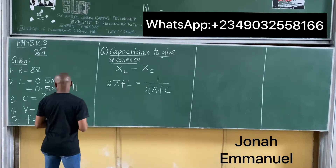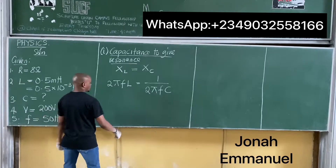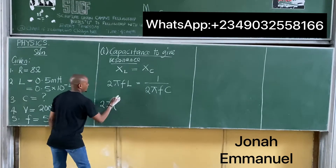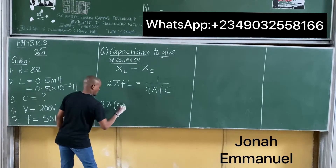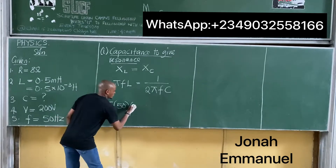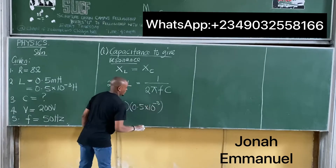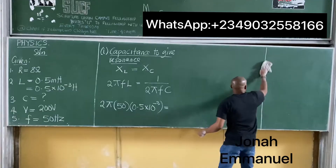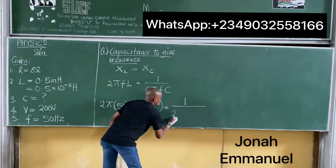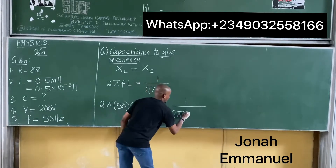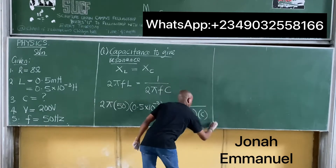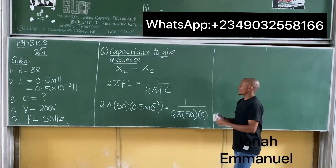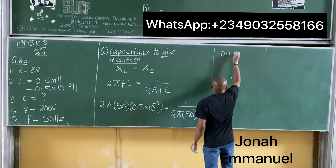So what do we get? This is 2 times pi times F — that's 50 — times L, which is 0.5 times 10 to the minus 3, is equal to 1 over 2 times pi times 50 times C. This left-hand side gives you approximately 0.157. That is equal to 1 over — this is 2 times 50 times pi — times C.